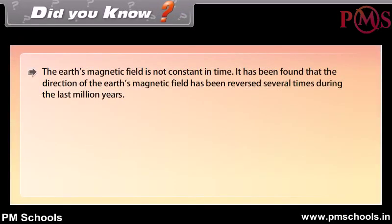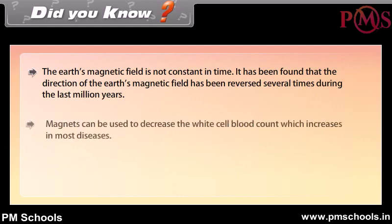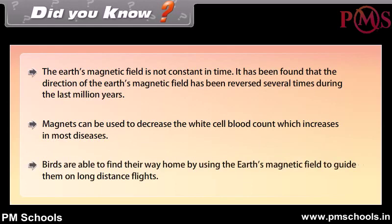Did you know: The Earth's magnetic field is not constant in time; the direction of the Earth's magnetic field has been reversed several times during the last million years. Magnets can be used to decrease the white blood cell count, which increases in most diseases. Birds are able to find their way home by using the Earth's magnetic field to guide them on long-distance flights.